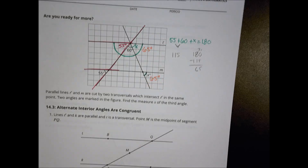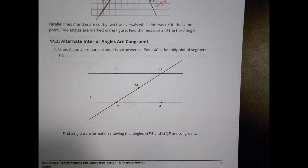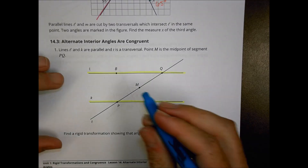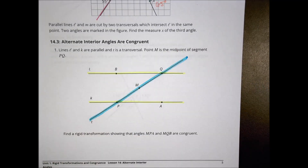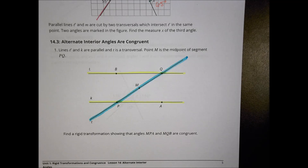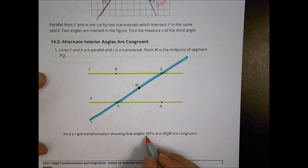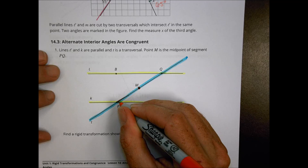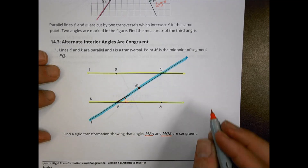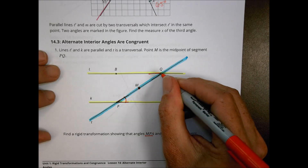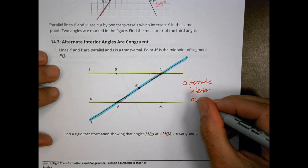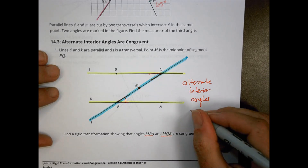Moving to the bottom section: we have two parallel lines L and K with transversal T cutting across them. M is the midpoint of segment PQ. We need to find a rigid transformation showing that angles MPA and MQB are congruent — meaning our alternate interior angles are congruent and equal to one another.